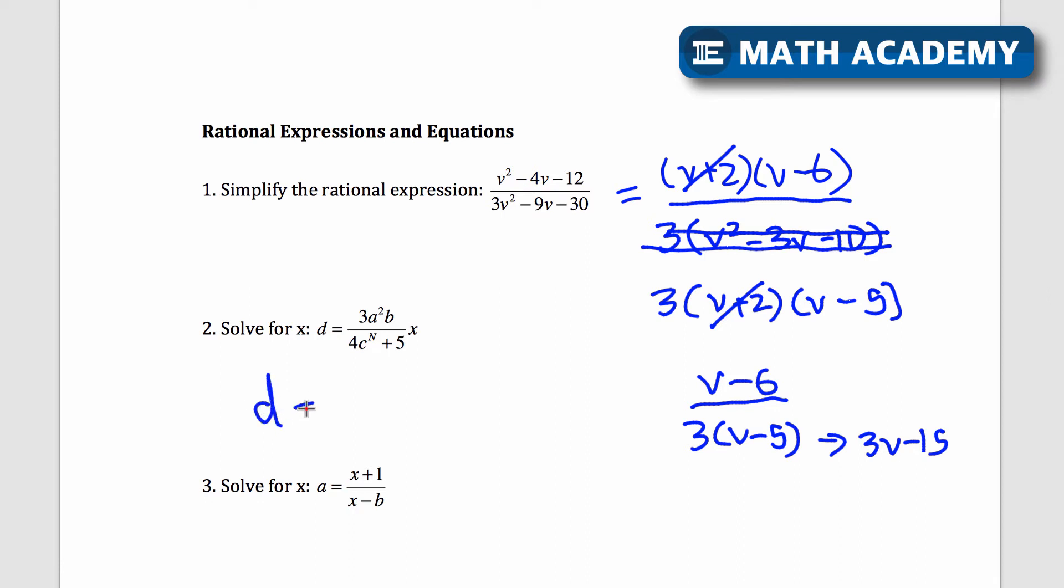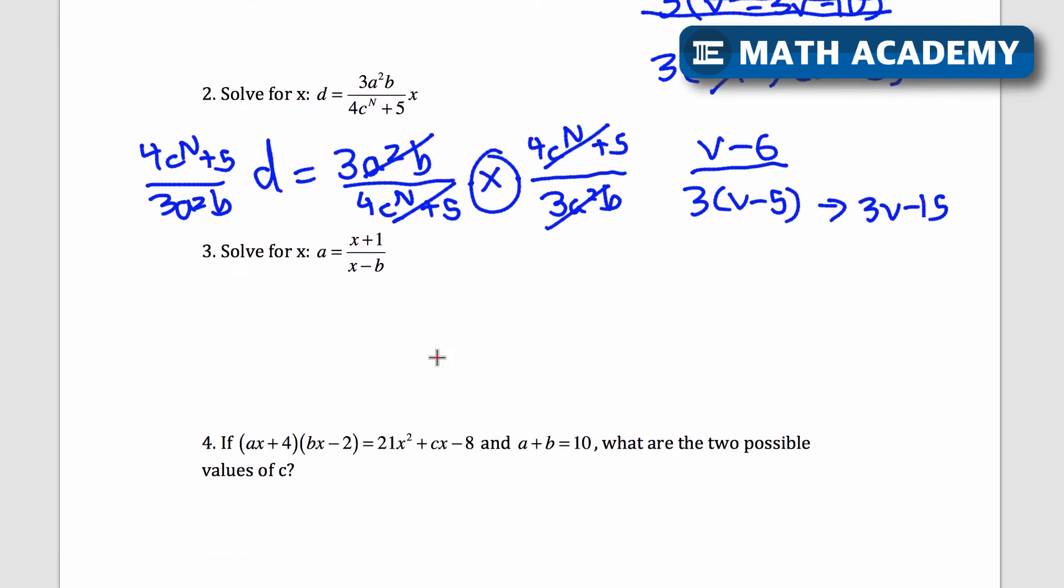So we have d equals 3a squared b over 4c to the power of n plus 5 times x. And I'm just going to multiply by this divided by this. So 4c to the power of n plus 5 divided by 3a squared times b. These all just cancel out like that. So I've got x by itself is equal to this. So we have to multiply both sides by 4c to the power of n plus 5 over 3a squared times b times d. So x is the only thing that's left here. They do this on the SAT sometimes. I've got to isolate this variable. Then I just need to multiply by the reciprocal.